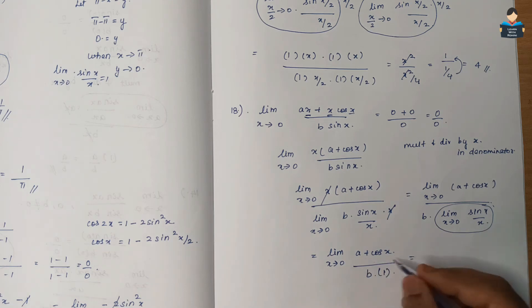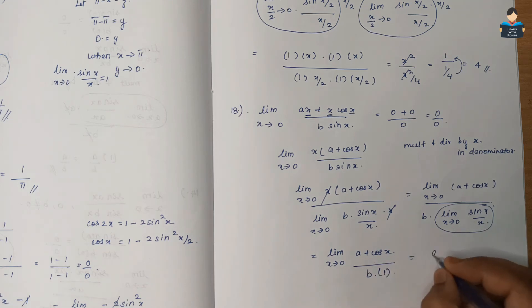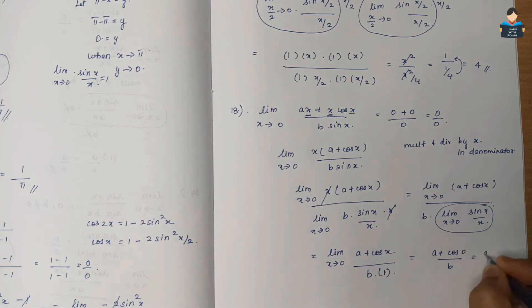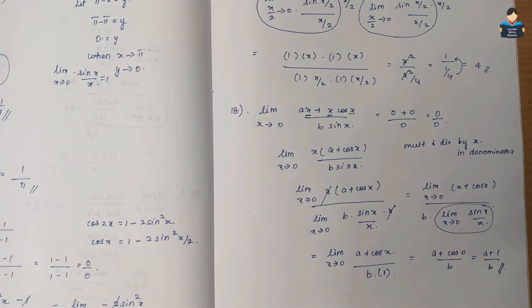Substituting x = 0: a + cos(0) by b = a + 1 by b. So the answer for Question 18 is (a + 1)/b.